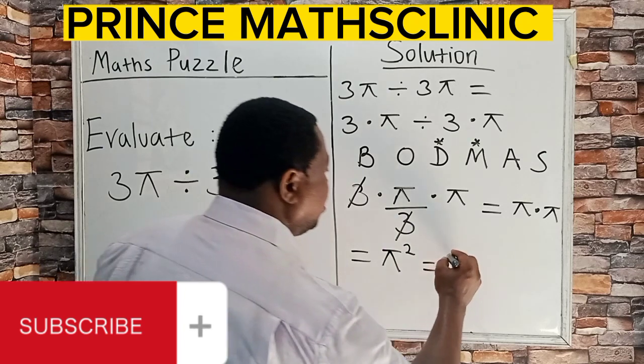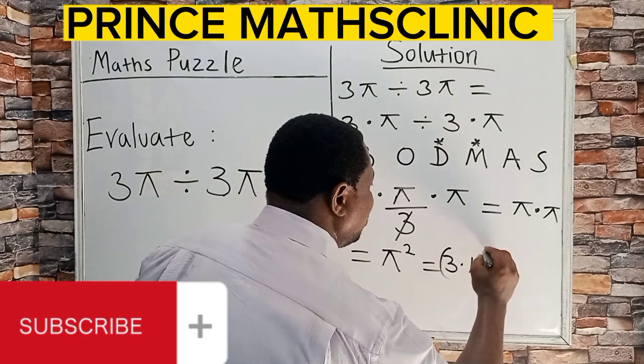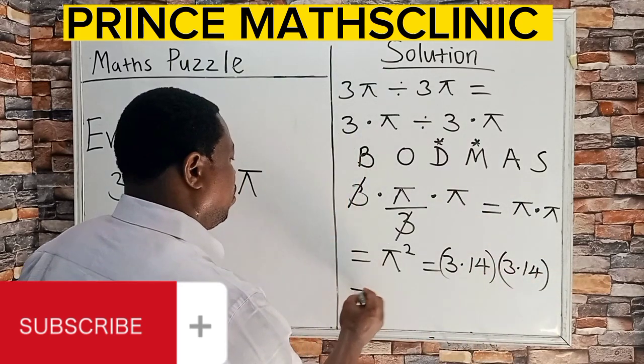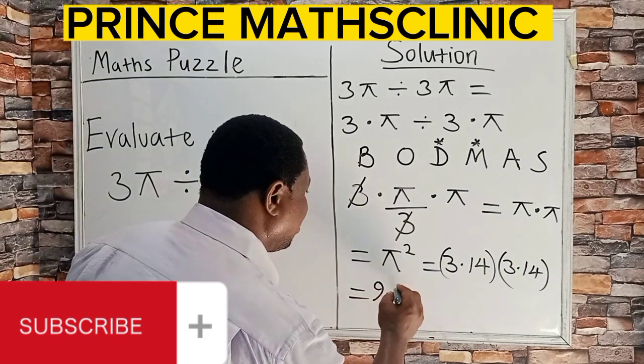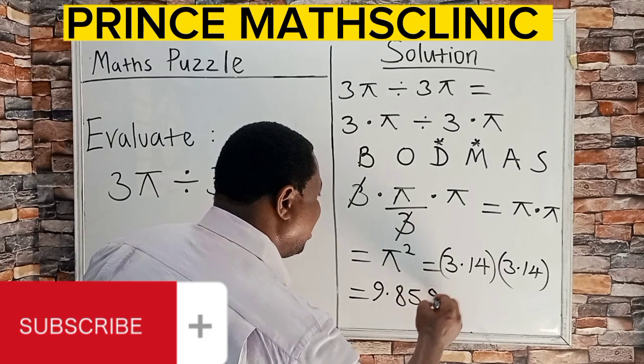And π is having a value of 3.14 multiplied by 3.14. And if you multiply this together, you are going to get 9.8596.